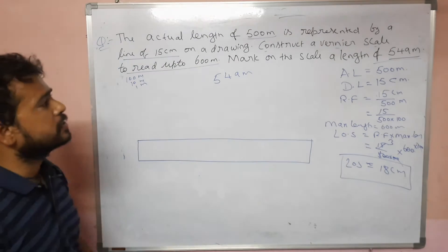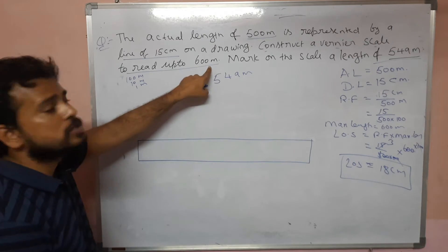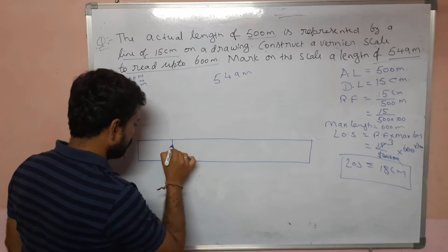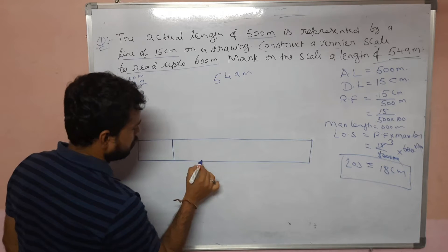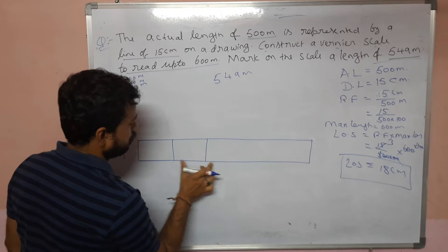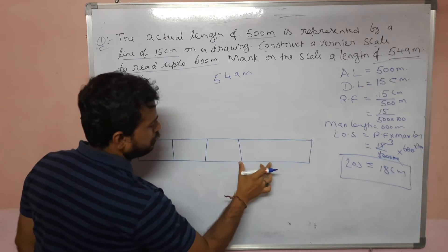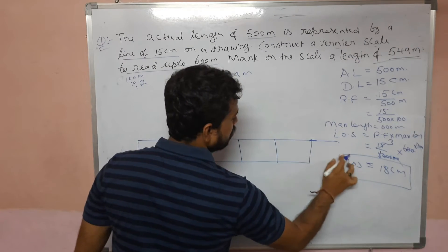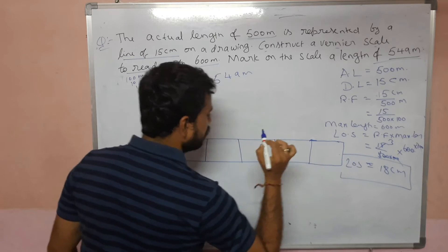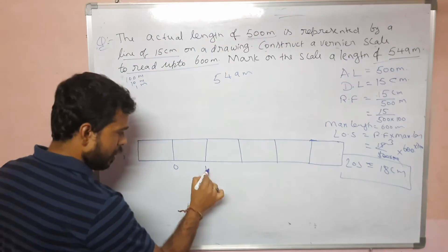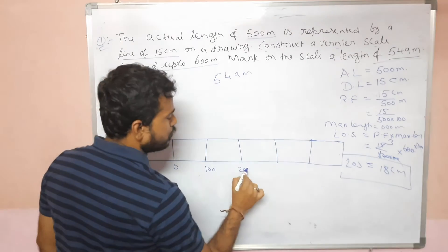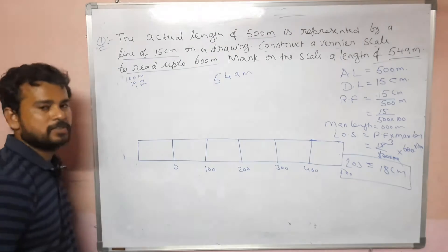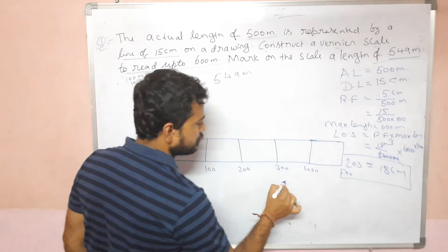Okay, 18 centimeters line — this is to measure up to 600 meters, covered in six parts: one, two, three, four, five, six. Each one is 100 meters, 200 meters, 300 meters, 400, 500, 600 — so each division is 100 meters.